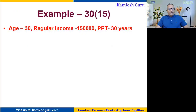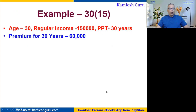For example, consider age 30, with a regular income of 1,50,000 and a premium paying term of 30 years. The total premium will come to about 60,000 rupees.